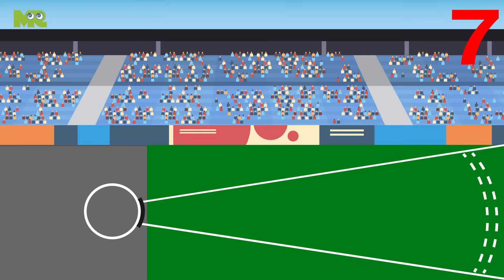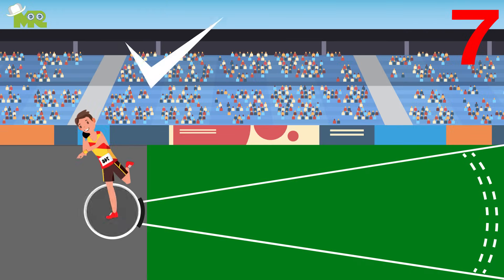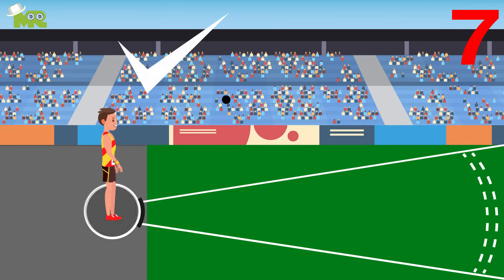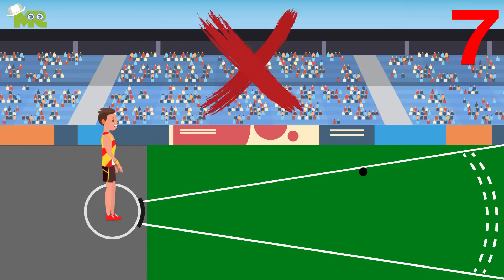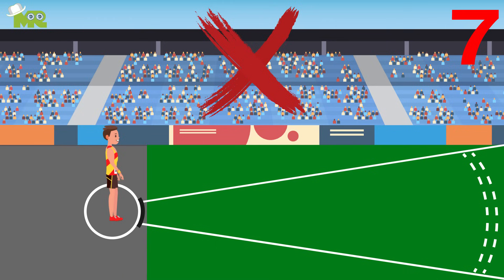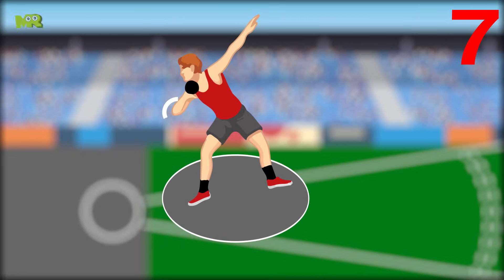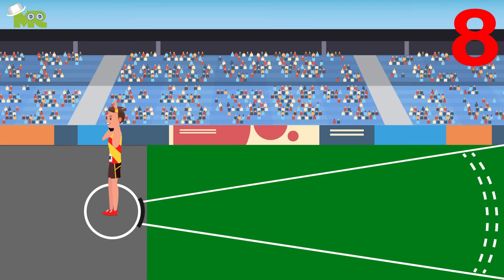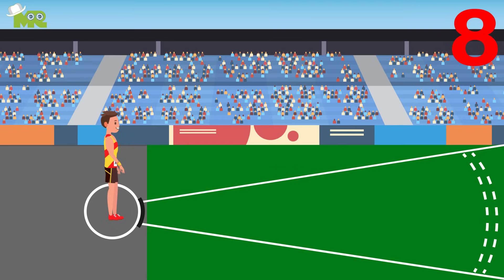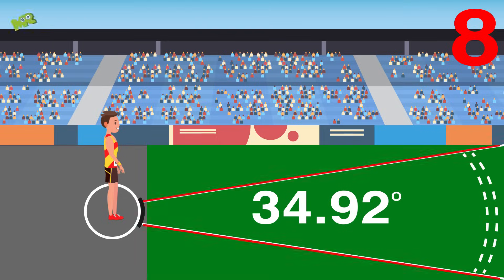7. An athlete can use the perimeter inside the circle, but certainly cannot use the border or outside area of the toe board. Extension of the limbs outside the circle during the throw is allowed. 8. The shot should only be thrown within the legal sector of 34.92 degrees of the throwing area.